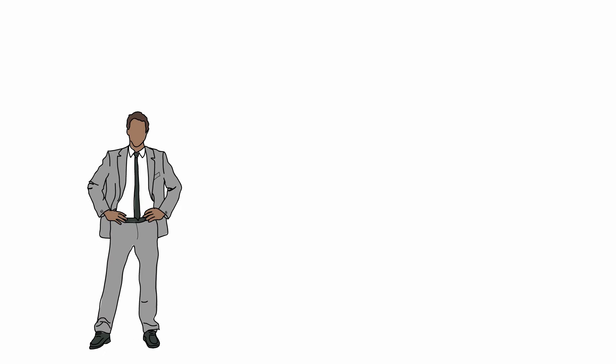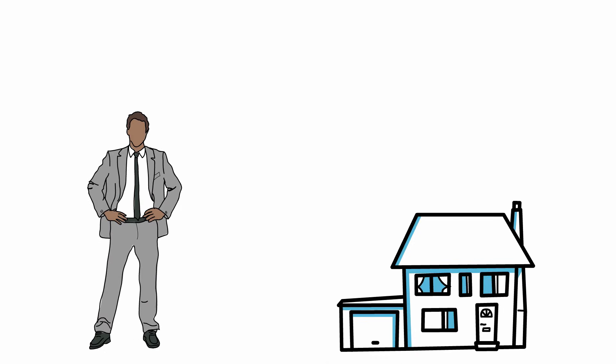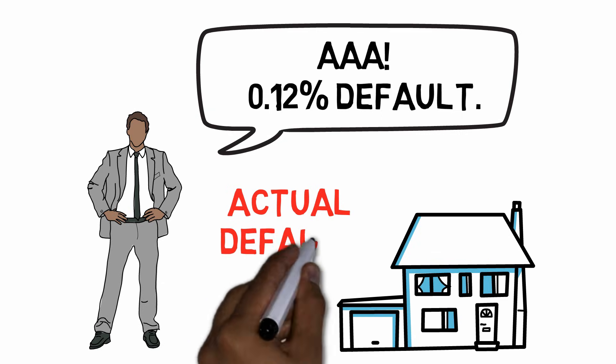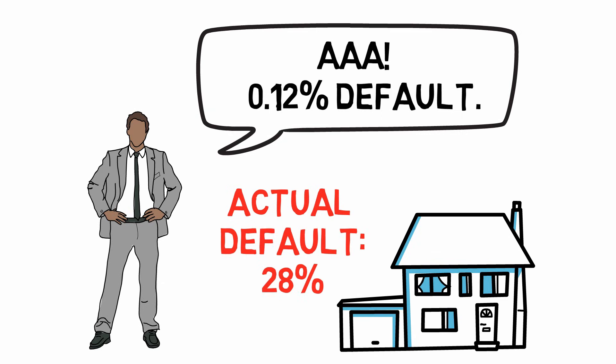Just before the outbreak of the financial crisis, the rating agencies had given their top ratings, the AAA, to thousands of mortgage-backed securities. Some of these were said to have only a 0.12% risk of defaulting. How many of them do you think defaulted in reality? A whopping 28%! That's 200 times more than S&P had predicted.